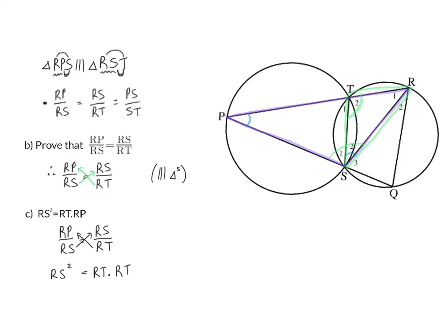And now I simply need to cross-multiply to get RS squared is equal to RT multiplied with RP. So they will usually start off asking you to prove triangles similar, and then ask you from there to form either ratios or products.